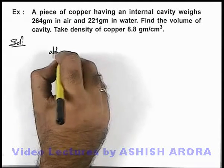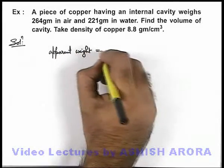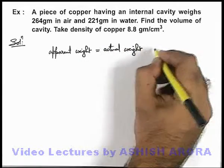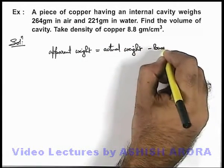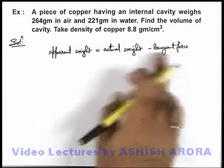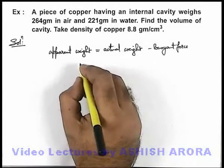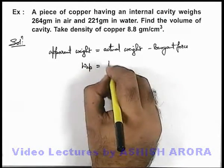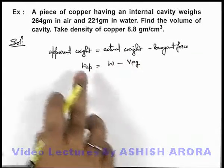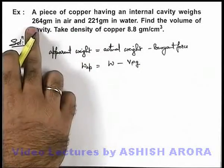The apparent weight, whenever we are required to calculate, is equal to actual weight minus buoyant force, as apparent weight is reduced because of buoyant force only. So apparent weight W_apparent equals actual weight W minus buoyant force, which can be written as V·ρ·g. The apparent weight of the piece of copper is given as 221 grams.